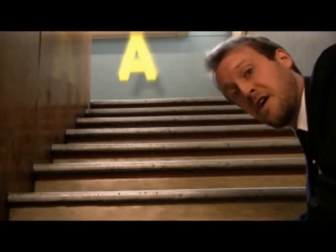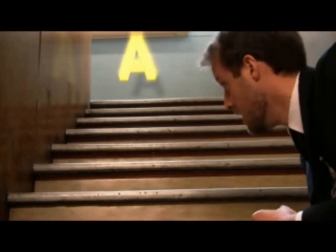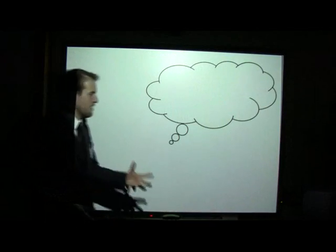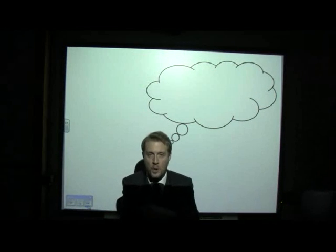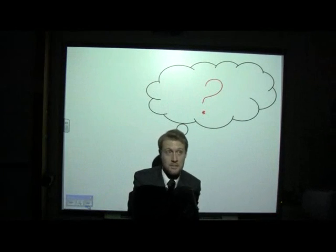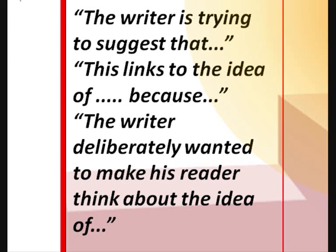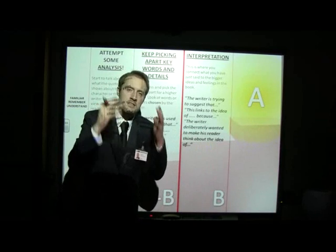You've done all of this work so far — you've given your quotation, you've talked about the words in it, and you're almost there. You've got to think about the big idea: what does this play or poem or book mean to you? I think he's really talking about this. So you're going to use sentences like 'the writer is trying to suggest that,' 'this links to the idea of,' 'because the writer deliberately wanted to make his reader think about the idea of.' And you've got to ask yourself: what are the main themes in the book?